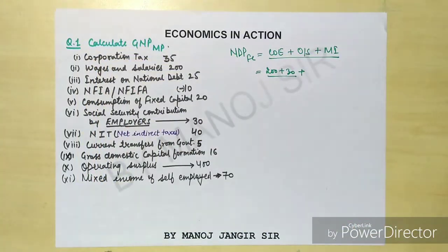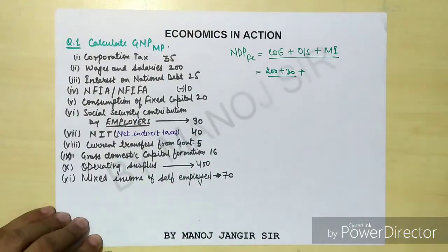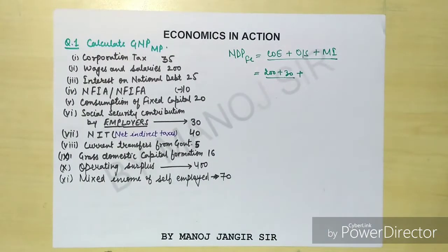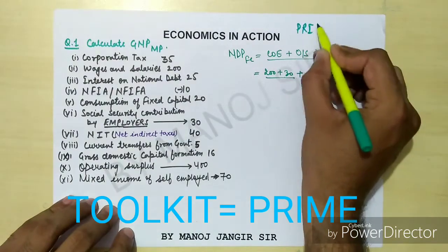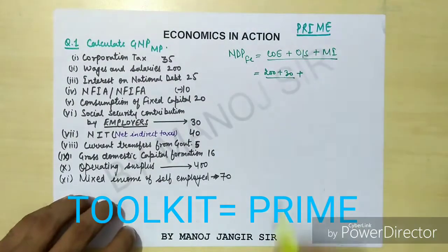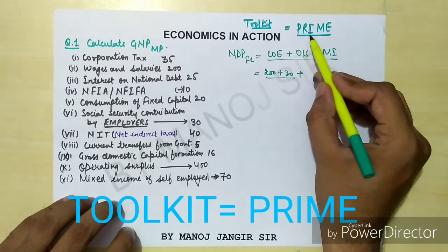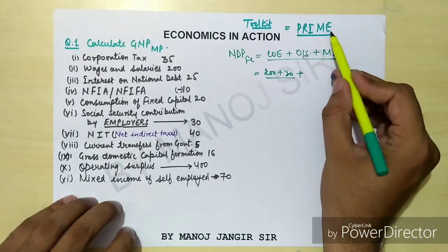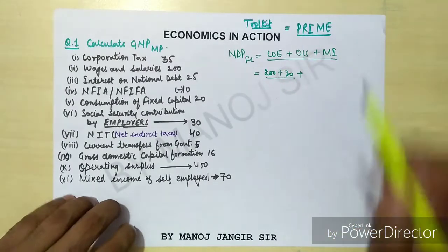The formula is COE plus OS plus MI, and we add to get NDPFC — our bus stop. Here is a shortcut toolkit: remember the word PRIME. P stands for Profit, R for Rent, I for Interest — these three make up Operating Surplus. M stands for Mixed Income, and E stands for Emoluments of Employees, which is Compensation of Employees. Using PRIME, you can solve any national income question.